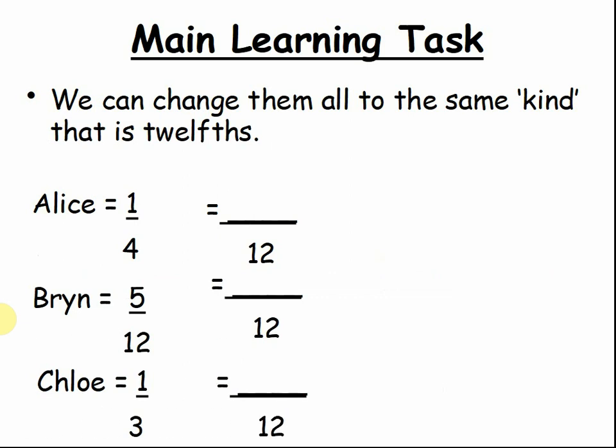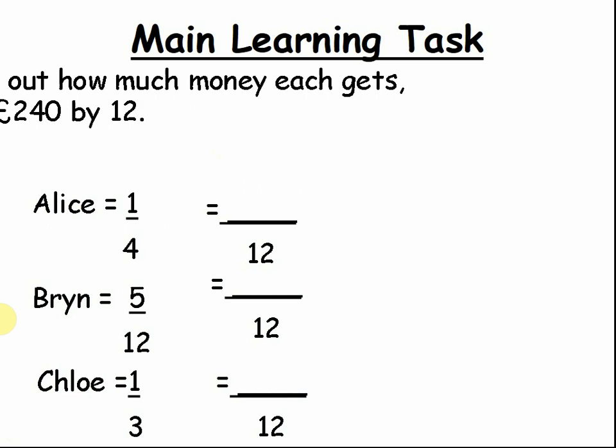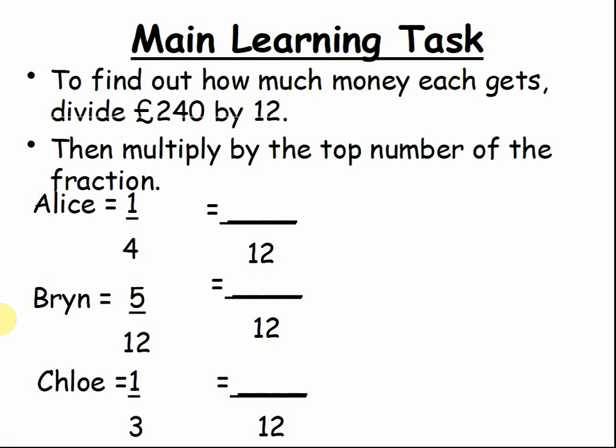Alice gets a quarter, Brian gets five twelfths, Chloe gets one third. So what do we do next? To find the differences between amounts, just take away the fractions now they are of the same kind. If you've solved the question, pause the video to see who has the most or least. By finding out how much money each gets: divide £2.40 by twelve, then multiply by the top of the fraction. Pause the video and work out how much each person gets.